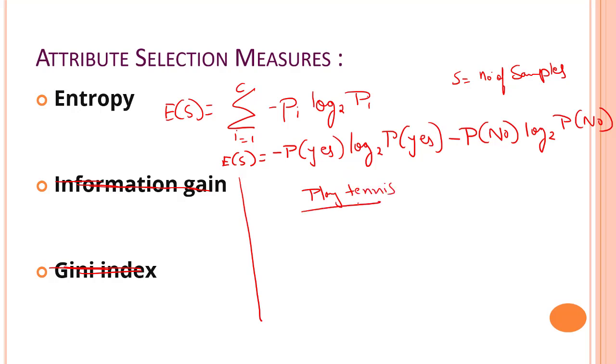We have yes and no - nine times we have yes and five times we have no. If I have to find the entropy of play tennis...